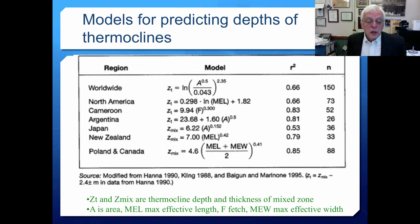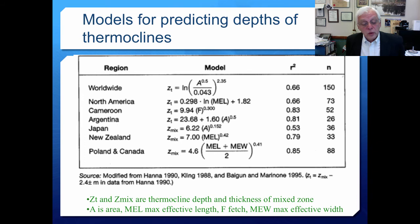There are many models for predicting thermocline depths. The variables that drive thermocline depth include Z-sub-T (thermocline depth) and Z-sub-mixing (thickness of the mixed zone). On the right sides of these equations, A is lake area, MEL is maximum effective length, F is fetch - how far the wind can work on the water - and MEW is maximum effective width. The depth of the thermocline is a fairly predictable function of ecosystem size.